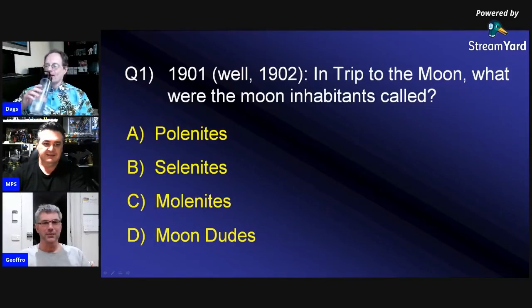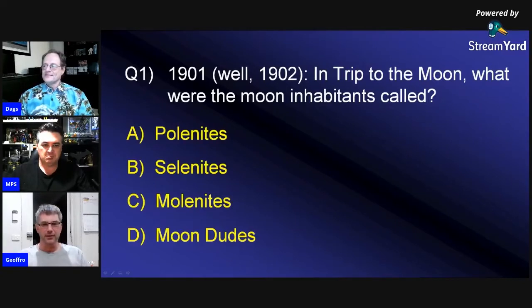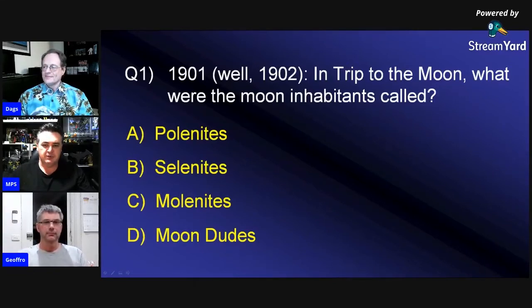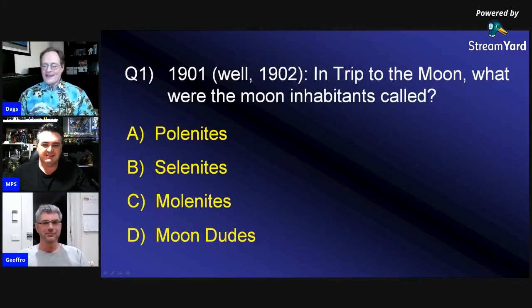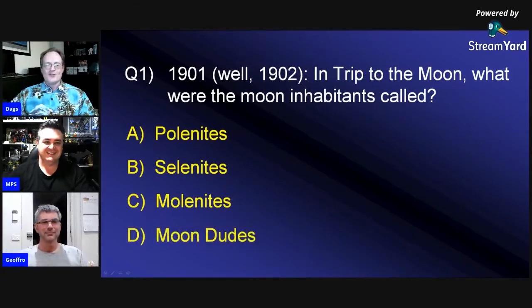I'd say D is really tough, but I'd go B because I think the 60s Trip to the Moon — the characters that Harryhausen did were Selenites. What do you reckon, dude? I'm going to say B for Molonites because it sounds like moon. Hang on, Molonites is C, dude. Everybody keep your own scores. Feel free to put them up here. When in doubt, always go for your D.